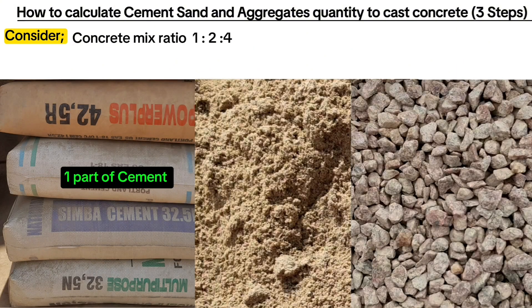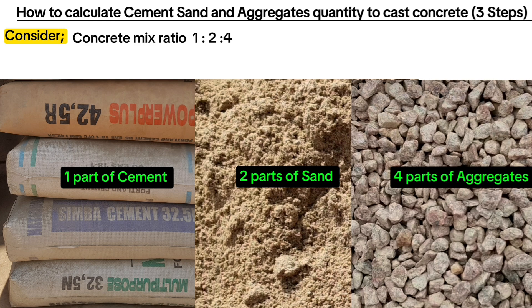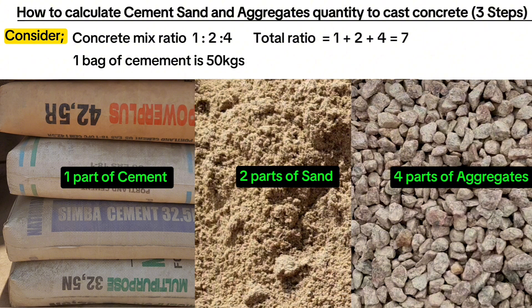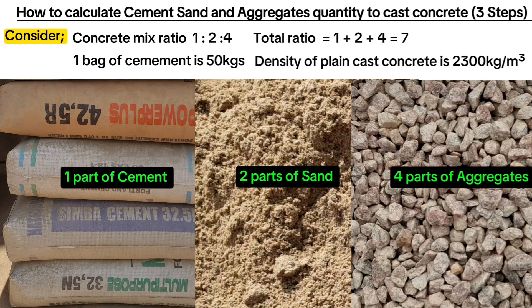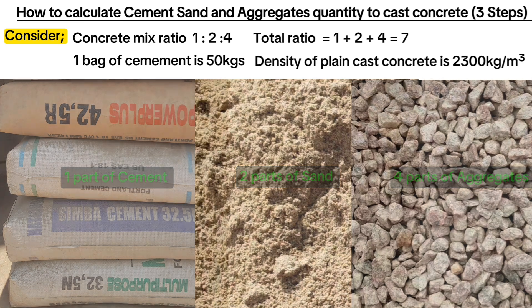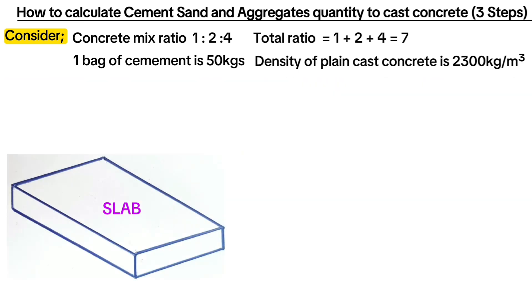That is one part of cement, two parts of sand, and four parts of aggregates. The total ratio here is seven. Consider that one bag of cement is 50 kilograms. Also consider the density of plain cast concrete as 2300 kilograms per cubic meter. Let's consider that we are casting concrete for a slab.